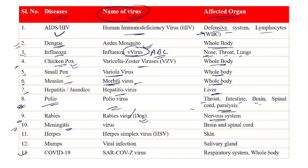Number ten: Meningitis is also one kind of disease caused because of virus — it attacks the brain and spinal cord. Number eleven: Herpes is caused because of the Herpes Simplex Virus (HSV) and it attacks the skin. Number twelve: Mumps is also a viral infection affecting the salivary gland. Number thirteen: COVID-19 is caused because of the SARS-CoV-2 virus, which attacks the respiratory system and later the whole body.